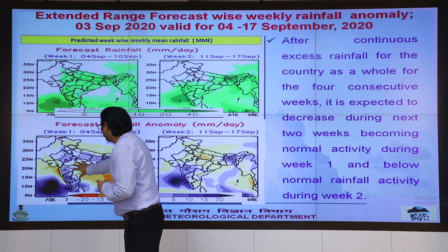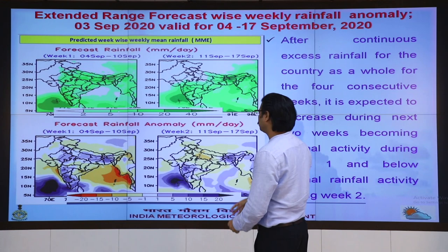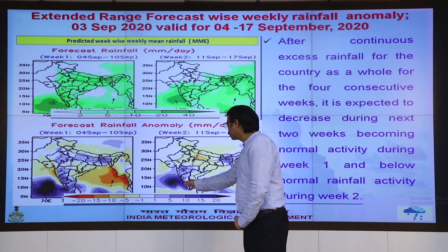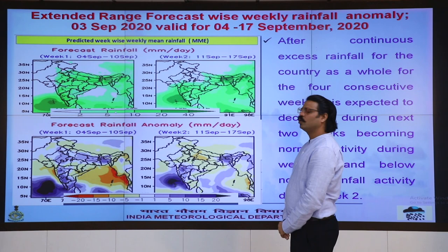Adjoining east India also has below normal rainfall in week 1. In the second week, almost the entire northwest India will have below normal conditions, but the western coast and northeast India are expected to receive normal rainfall.